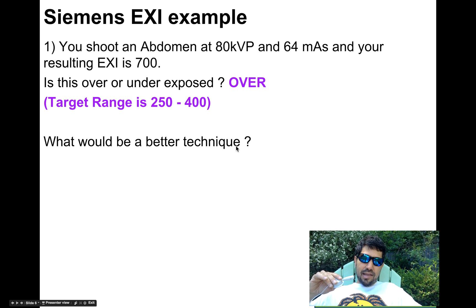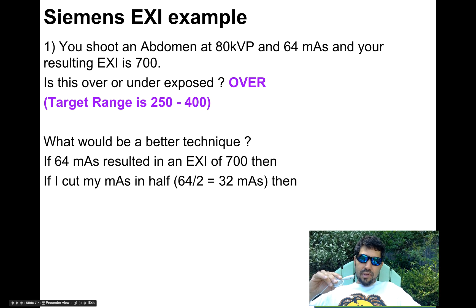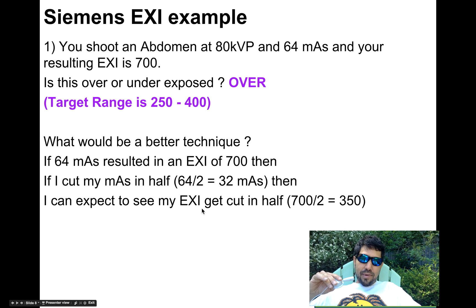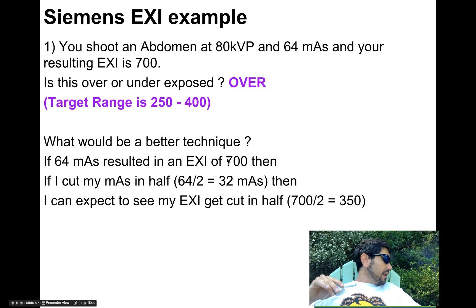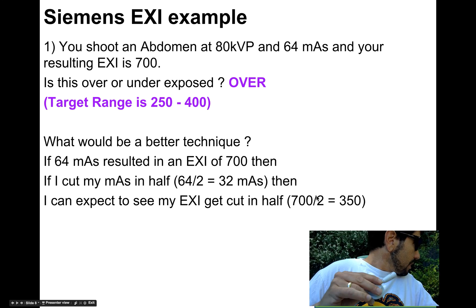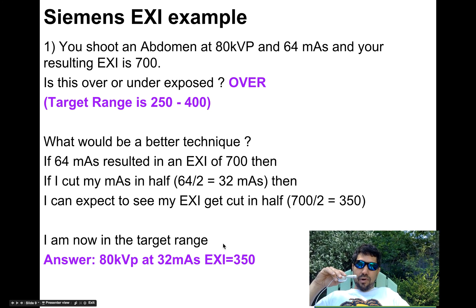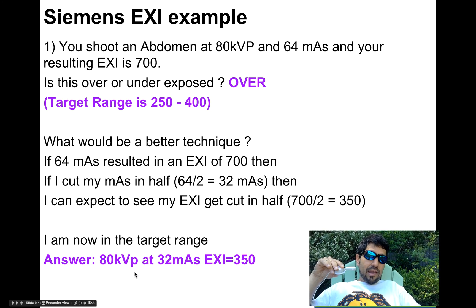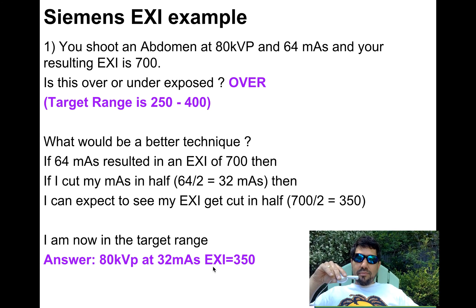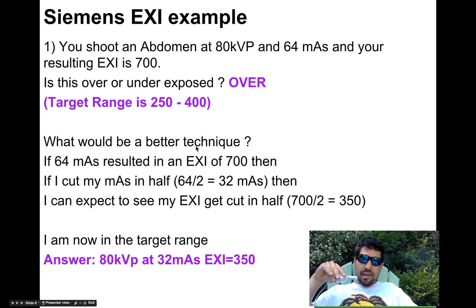For a better technique, we're going to cut the 64 mAs in half. So at 64 mAs, I got an EXI of 800. If I cut that mAs in half — 64 divided by 2 equals 32 mAs — and if I shot it with 32 mAs, I would expect my EXI to get cut in half: 800 cut in half would be 400. Now we're in range. So the answer would be 80 kVp, 32 mAs, giving an EXI of 400. That would be a better technique and in the target range.